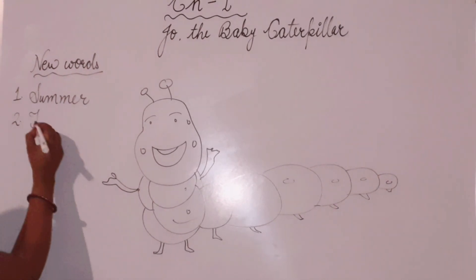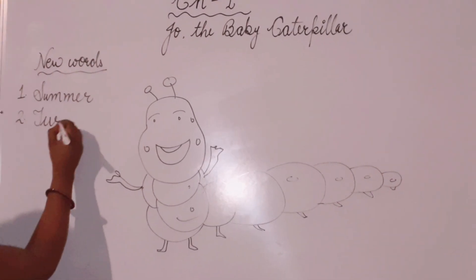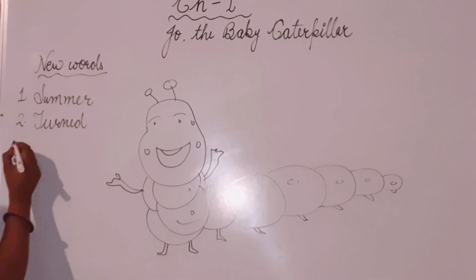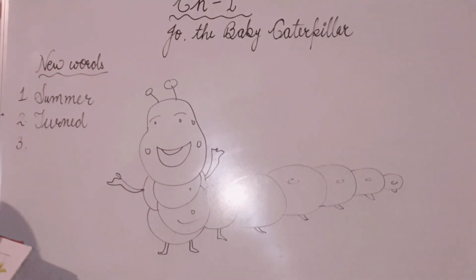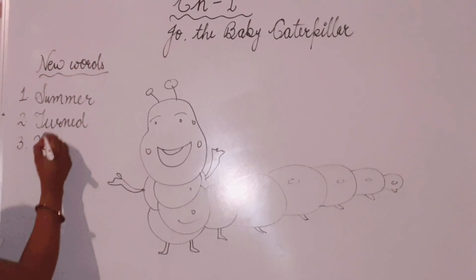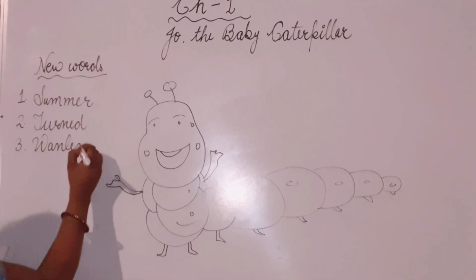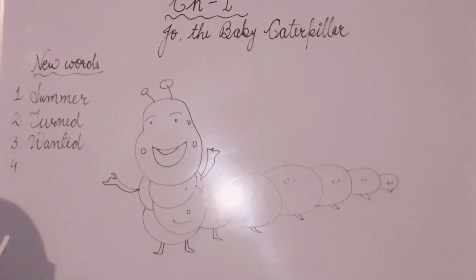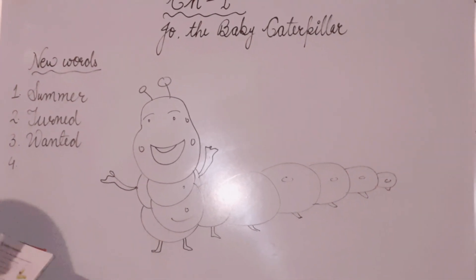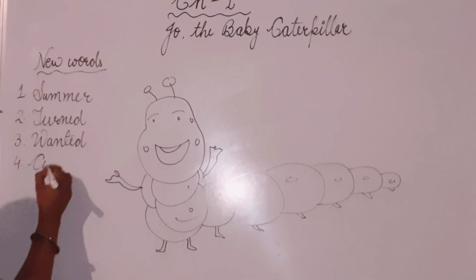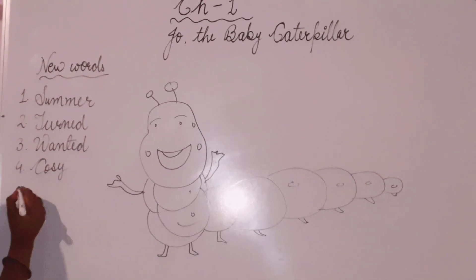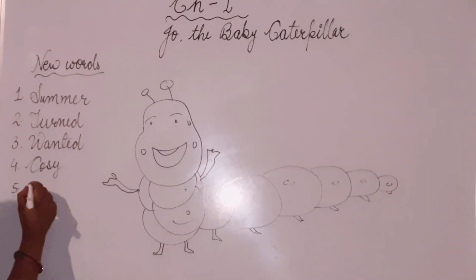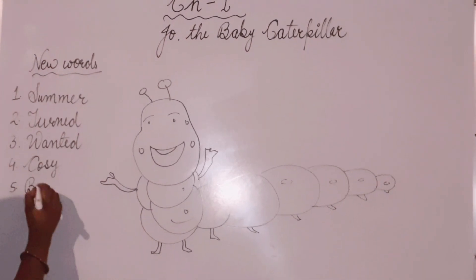The second word is turn. Turn means to change direction or change form. The third word is wanted — wanted means wish karna ya chahna, for example: I want this. The fourth word is cozy — cozy means comfortable, aram da. It means a warm, comfortable feeling.